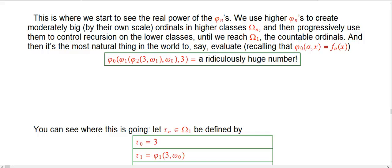Okay, finally we're getting close to the promised payoff. We're now getting a sense of the real power of these φ_n's. They really are just a very elegant ordinal collapsing function. The idea is we're going to use higher φ_n's to create ordinals in various classes.